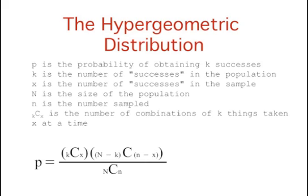This is the general formula for computing probabilities using the hypergeometric distribution. p is the probability of obtaining k successes,